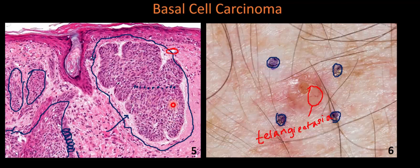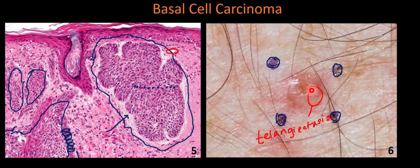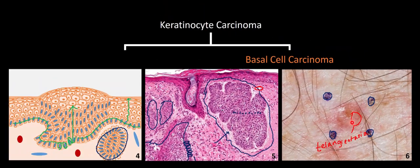Over time, as cancerous cells proliferate, they can outgrow their blood supply, leading to necrosis or cell death. This is reflected in the central erosion of the lesion. This central erosion or ulceration is commonly called a rodent ulcer because it looks as if a rodent took a bite out of the center of the lesion. That wraps up our histological-clinical correlations for basal cell carcinoma, and hopefully this video has given you a greater appreciation for why keratinocyte carcinomas look the way they do based on histology.